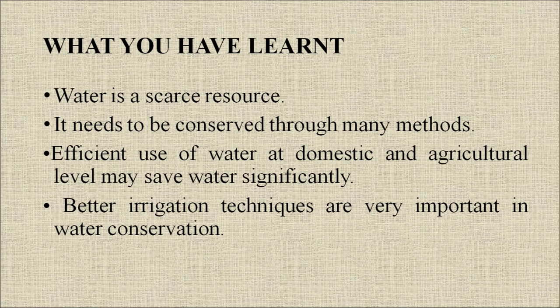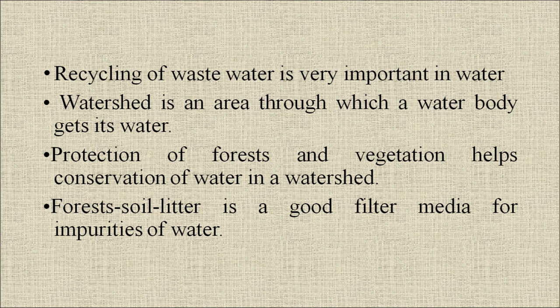This is all about the methods of how we can conserve water at different levels. To recap the main points: water is a scarce resource and needs to be conserved through many methods; efficient use of water at domestic and agricultural level may save water significantly; better irrigation techniques are very important in water conservation; recycling of waste water is very important; a watershed is an area through which a water body gets its water; and protection of forest and vegetation helps conservation of water in the watershed, as forest soil litter is a good filter media for impurities of water. Thank you.